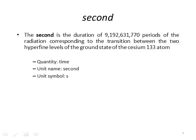The second is the duration of 9,192,631,770 periods of the radiation corresponding to the transition between the two hyperfine levels of the ground state of the cesium-133 atom. Remember that it's the cesium-133 atom and we're looking at atomic transitions to define this quantity.